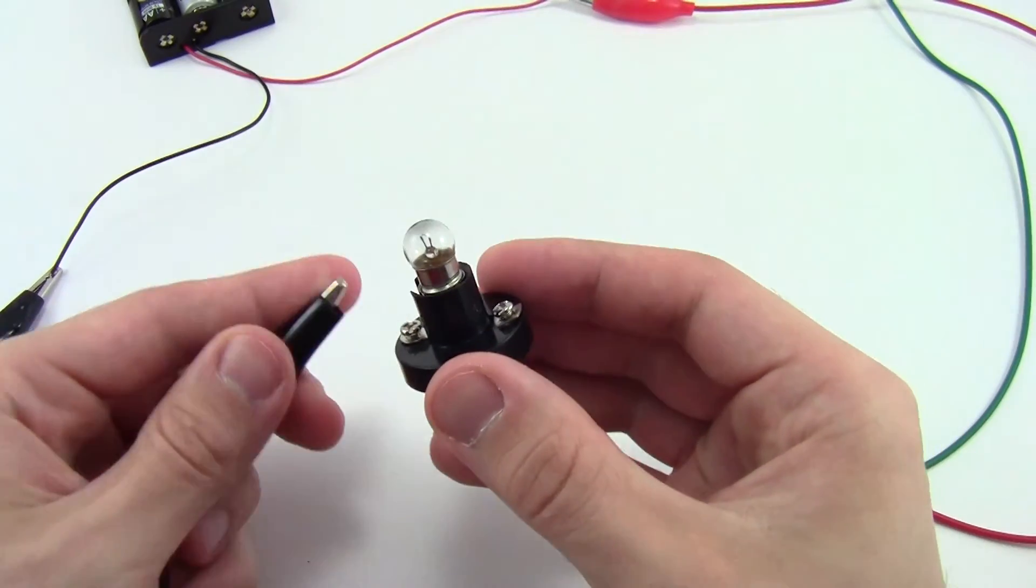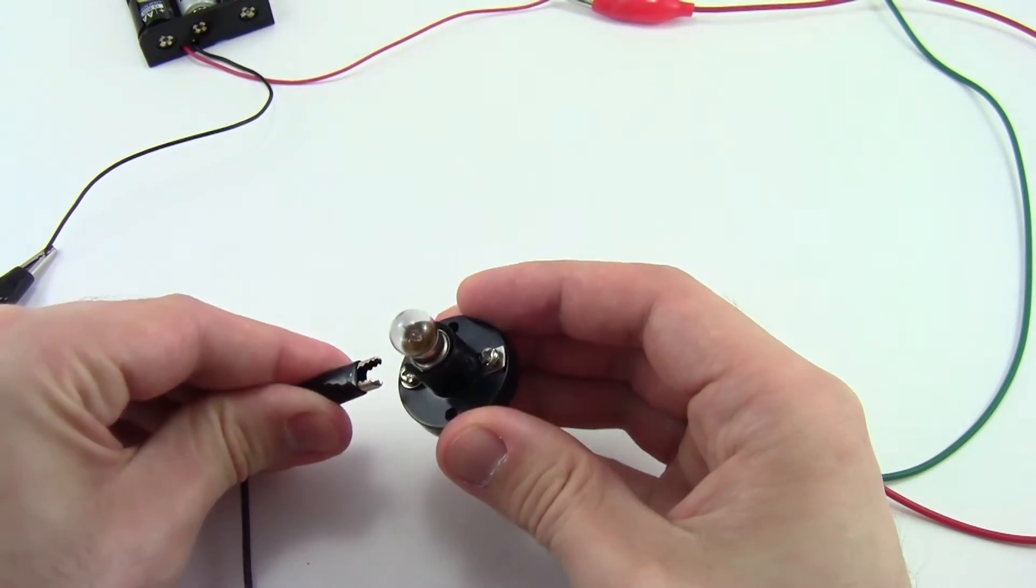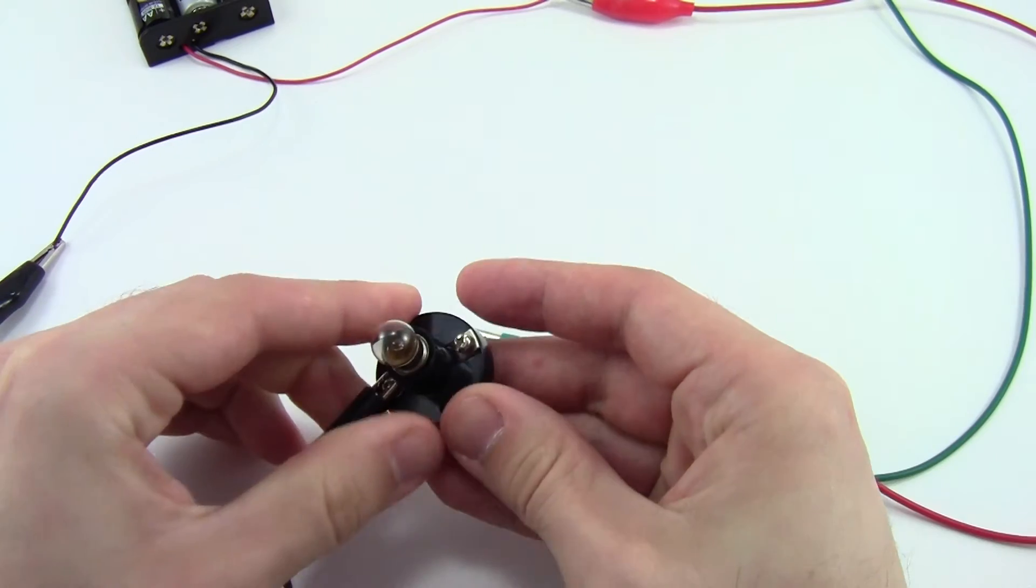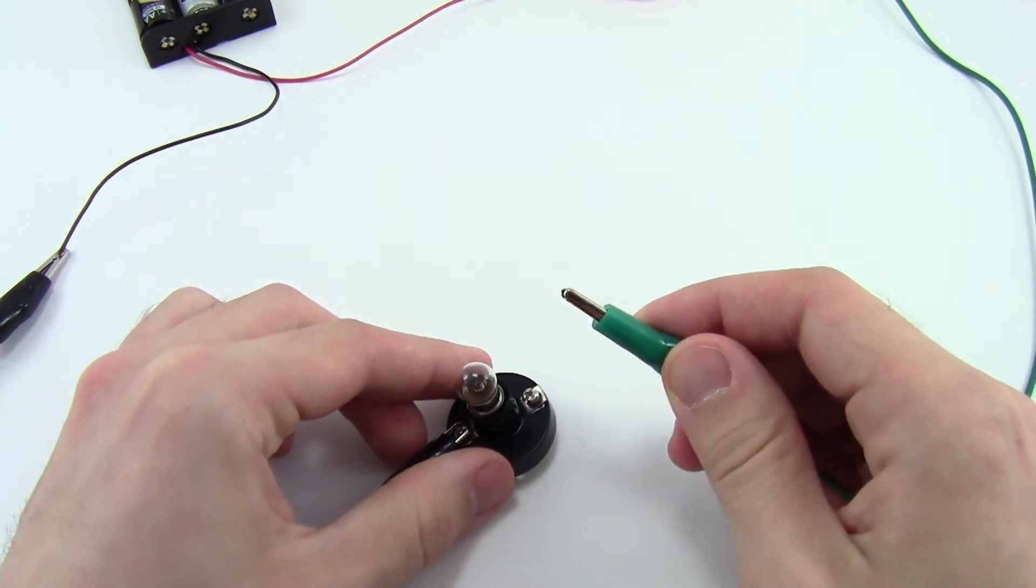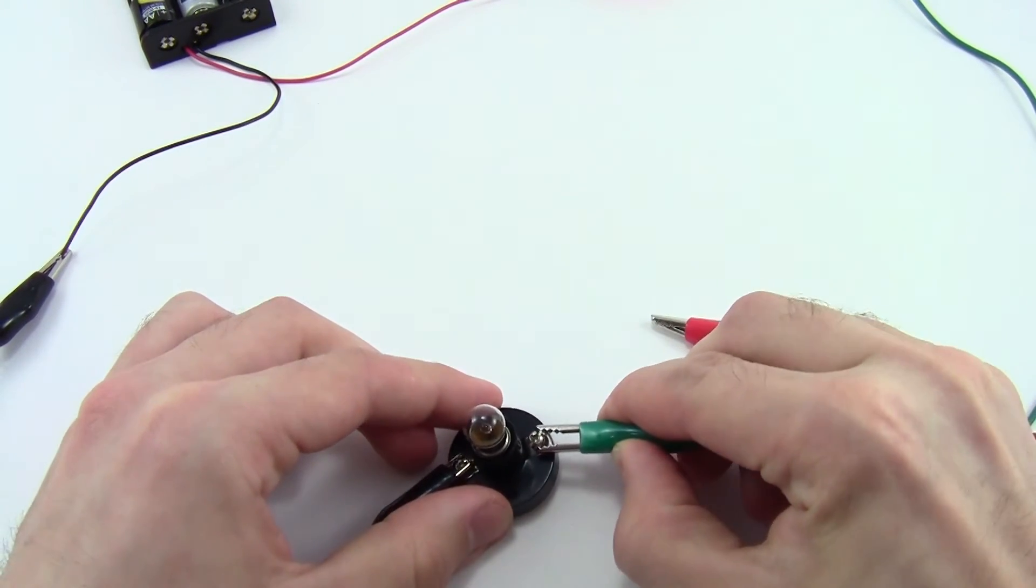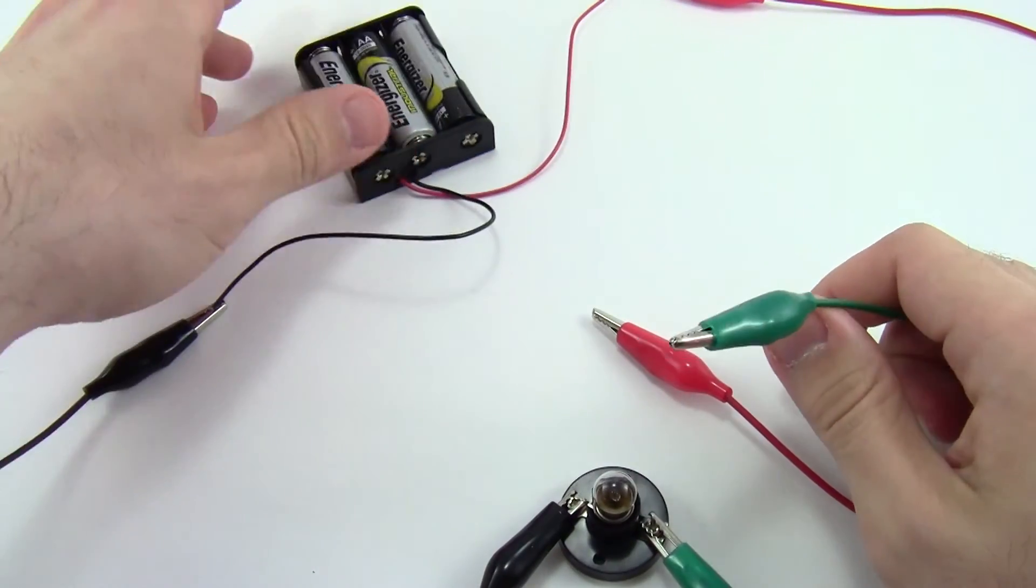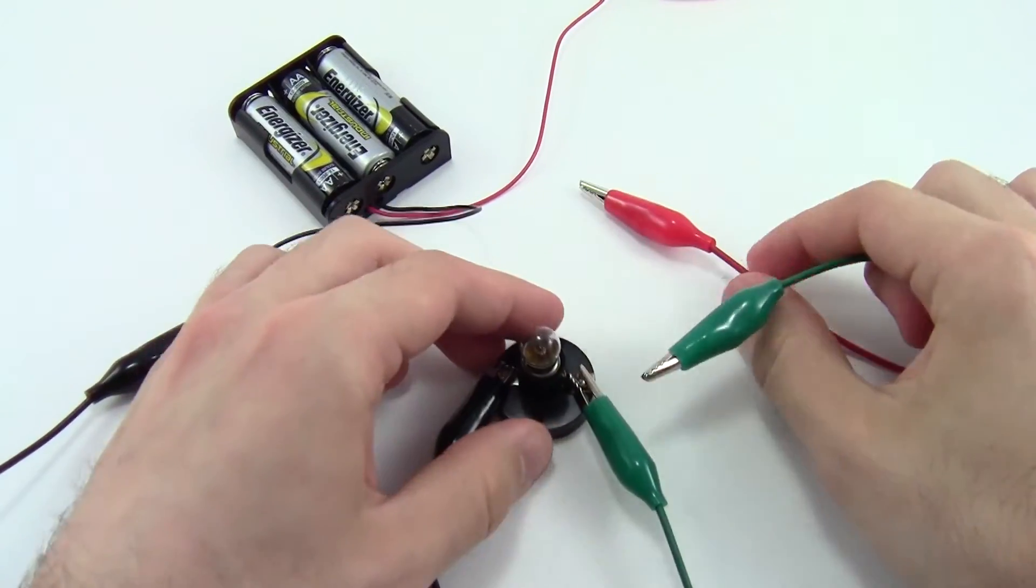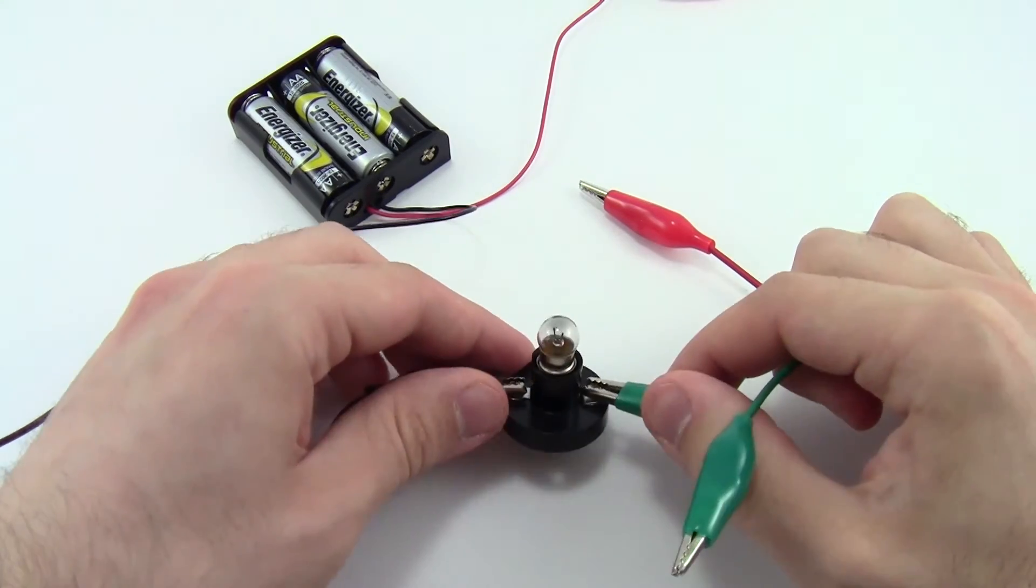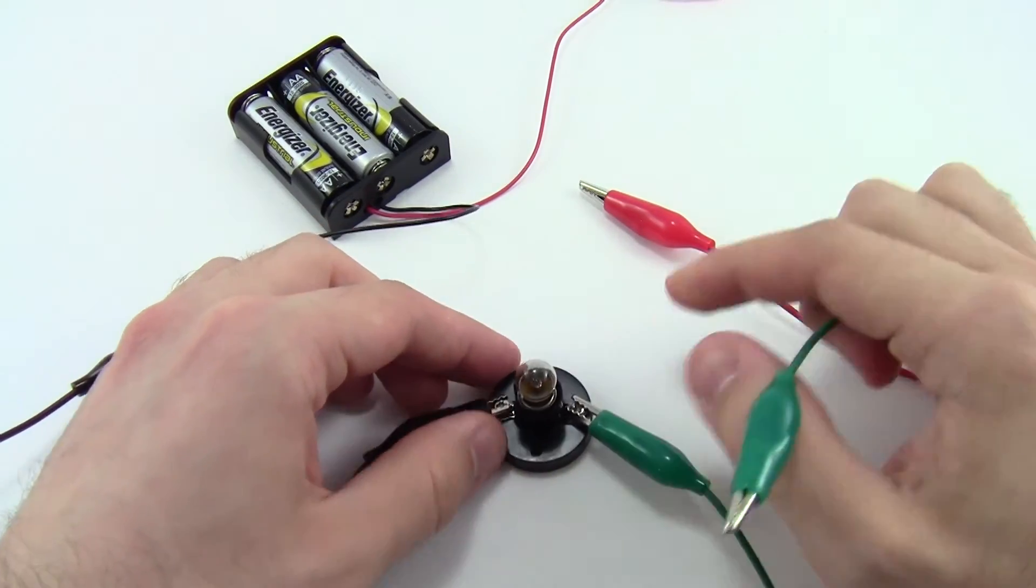So once you've loosened those a little bit, take the other end of the black alligator clip, connect it to one of the screws, and now take the green alligator clip, which you haven't used yet, and connect it to the other screw. So as of right now, we still have an open circuit. There is no complete path for the electricity to flow, so this light bulb does not light up.